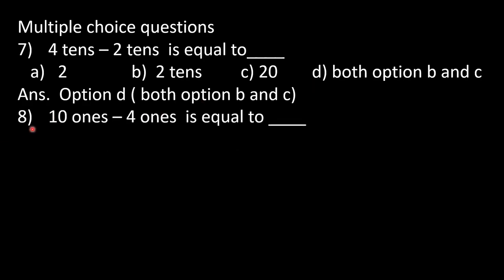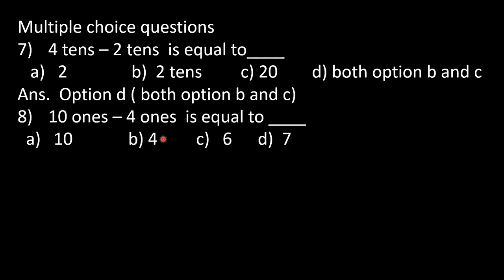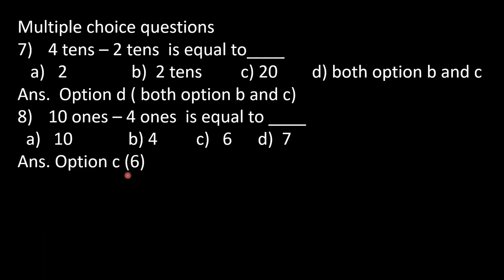Question number 8: 10 ones minus 4 ones is equal to dash. Options: A: 10, B: 4, C: 6, D: 7. 10 ones means 10 and 4 ones means 4. Keep 10 in mind and count backward 4 steps: 9, 8, 7, 6. Answer is 6, option C is correct.